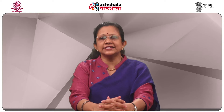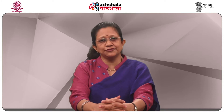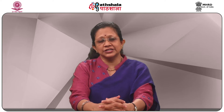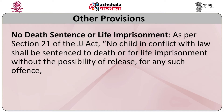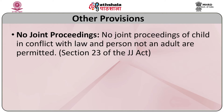At the children's court, upon receipt of the preliminary assessment from the board, the children's court may also decide whether there is a need for a trial or not. If no trial is needed, the case proceeds as per the provisions of the JJ Act. If the children's court decides a trial is needed, there are certain separate procedures for it. There is no death sentence or life imprisonment for any child in conflict with law. There are also no joint proceedings of a child in conflict with law and an adult under the same offence charges.